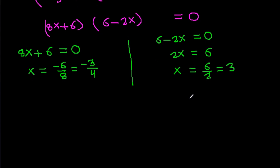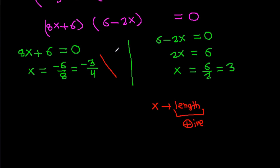Since x is a length, it must be positive. So x cannot be minus 3 over 4. Therefore x equals 3.